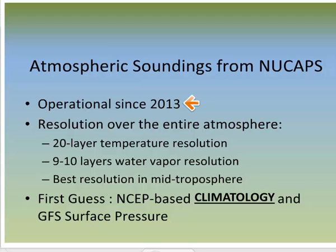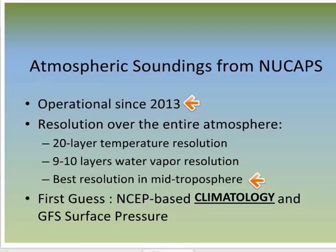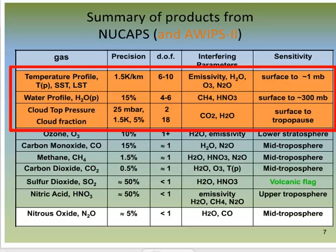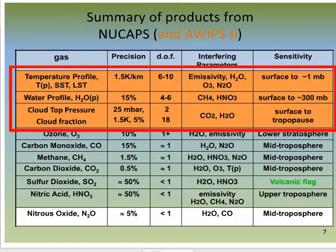NuCAPS soundings have been available since 2013, and the best resolution is in the mid-troposphere. The first guess is derived from climatology. If the physical retrieval using CrIS fails or if the cloud clearing fails, a microwave-only retrieval will be done for temperature and moisture. Think of the degrees of freedom as something like layer resolution — there are approximately 6 to 10 layers of temperature resolved in the profile and 4 to 6 layers of moisture, so don't expect to see very thin layers in a NuCAPS sounding.